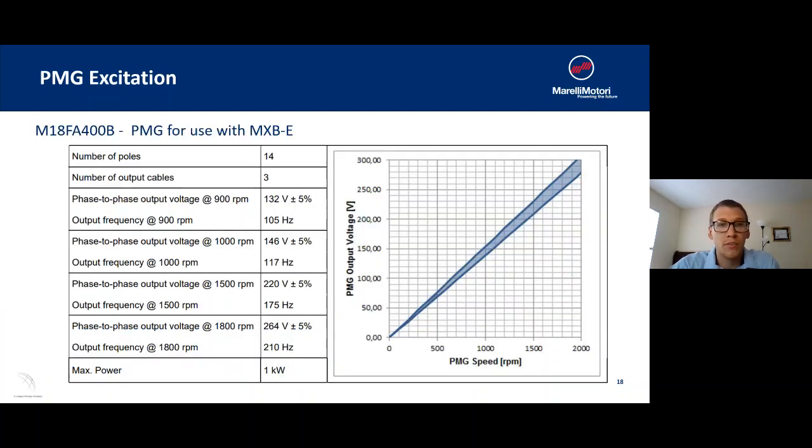So for example of a PMG that we use, this is one that we would use for our MXBE series. It's a 14-pole PMG with three-phase output. Most US applications are operating at 1800 RPM, so we'll look down there. You're going to see a 264 volt, 210 hertz output that's around 1 kW. And that's what's going to be pushed into the AVR to power this system.